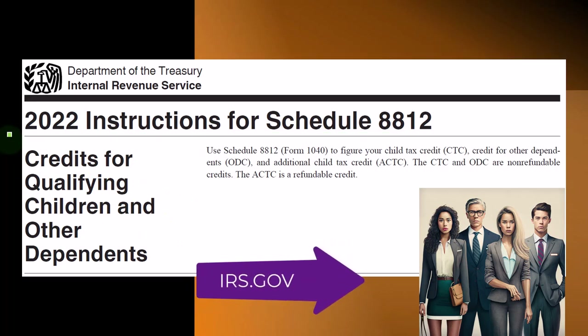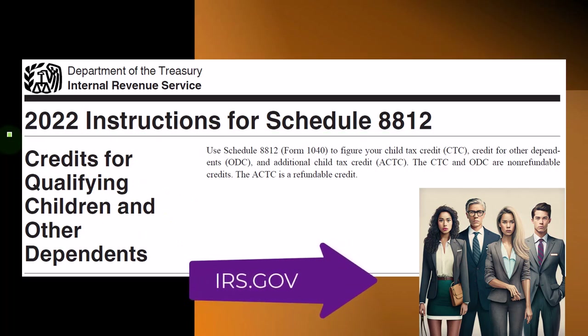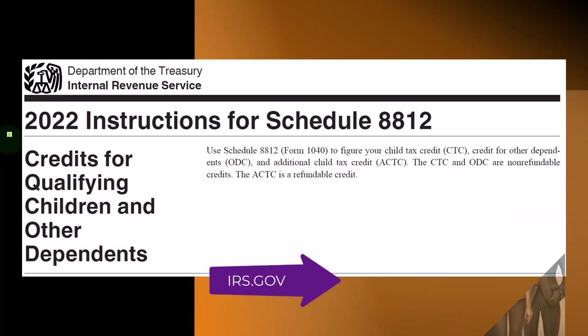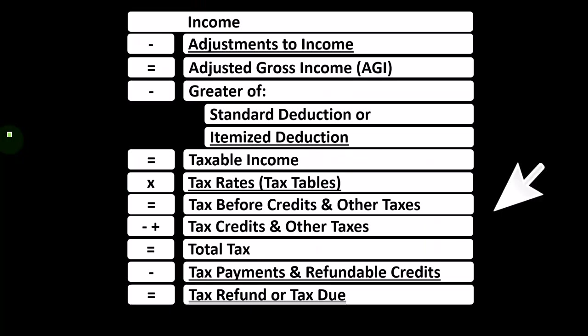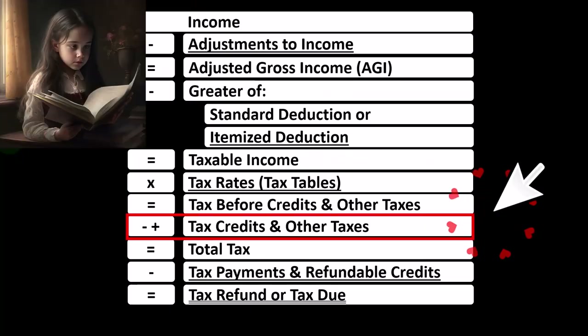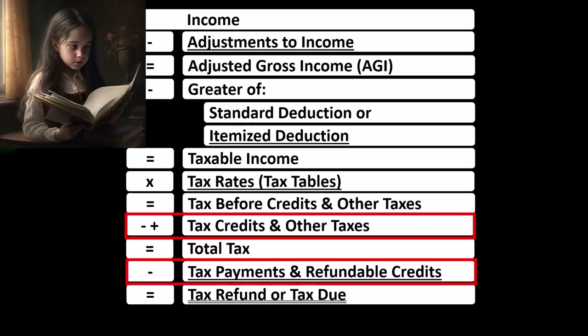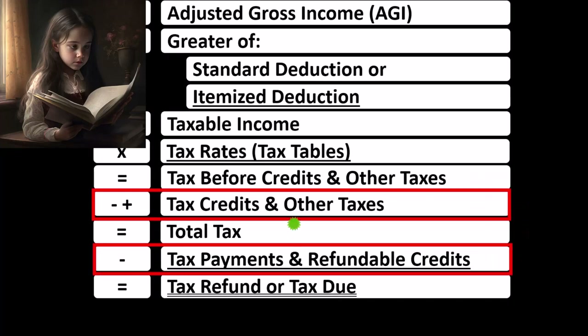You can find this on the IRS website, irs.gov. Looking at the income tax formula, we're down at the bottom where the credits are located.